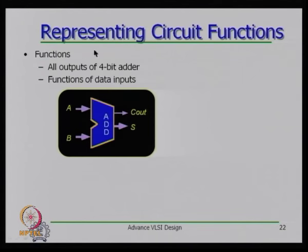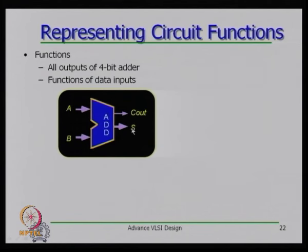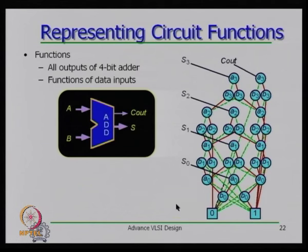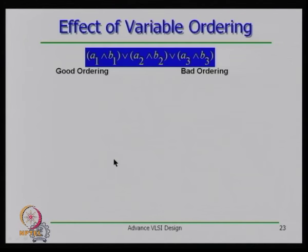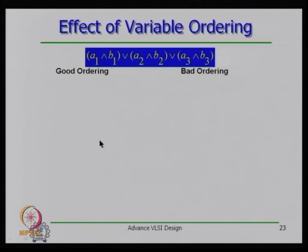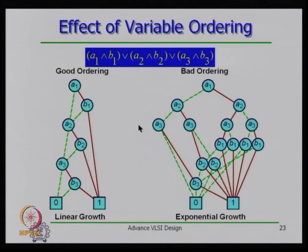For example, a 4-bit adder with 8 inputs and 5 outputs has a BDD with 31 nodes; a 64-input version has 571 nodes — linear growth with respect to inputs. However, the shape and size depend on variable ordering. For this function, ordering as a1,b1,a2,b2,a3,b3 gives a compact ROBDD, whereas ordering as a1,a2,a3,b1,b2,b3 results in a much larger ROBDD with more nodes and edges.